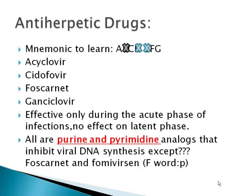Very important to know is that anti-herpetic drugs are effective only during the acute phase of infection — they have no effect on the latent phase. They are all purine and pyrimidine analogs that actually inhibit viral DNA synthesis, except two drugs: foscarnet and fomivirsen. You can remember them by the letter F — they just don't follow the rules.